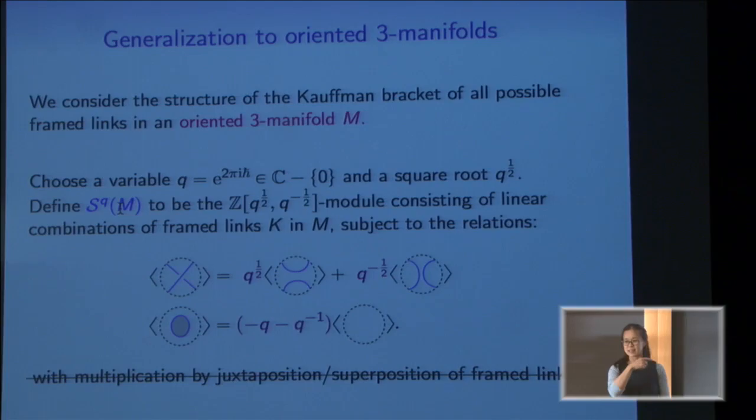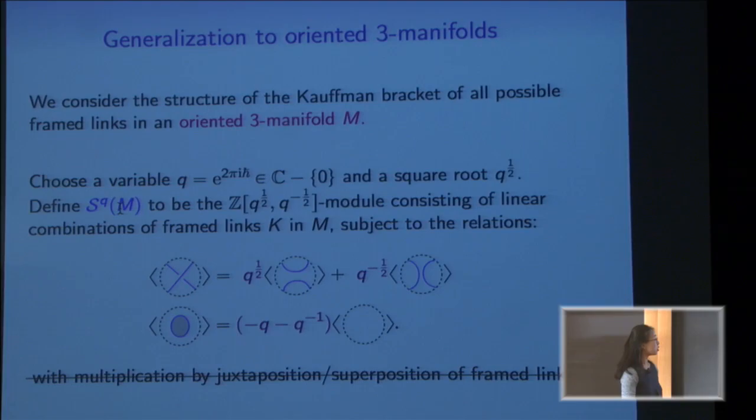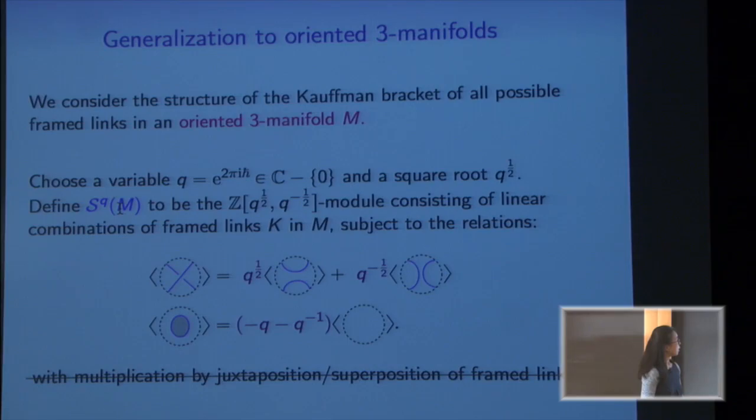For S³ itself, the skein module is free of rank one — it's exactly Z[q, q^{-1}]. For generic three-manifolds, it's a module, and even then it's hard to compute, even for simple things like lens spaces.